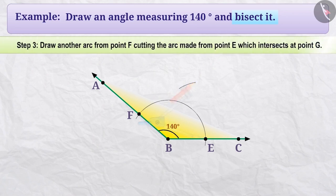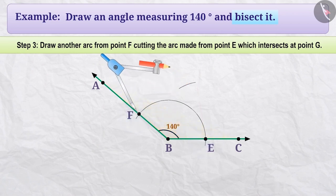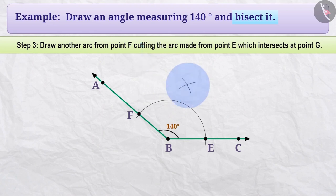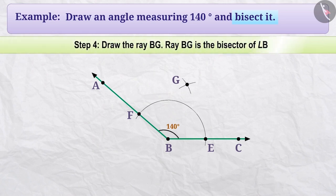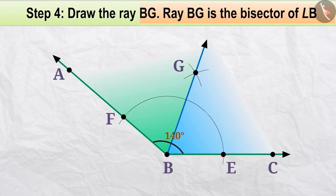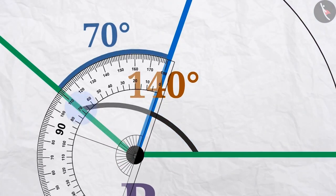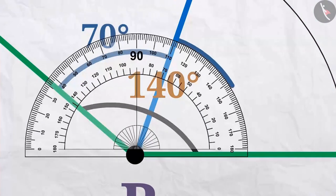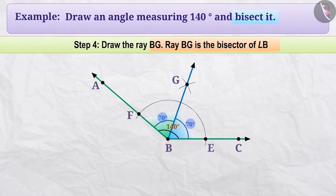Step 3: Keeping the same radius in the compass, place the pointed end on F and draw another arc that intersects the arc made from E. Both arcs intersect at point G. Step 4: Draw ray BG from vertex B through G. Ray BG divides angle ABC into two equal parts, so it is the desired bisector. To verify this, measure both angles with a protractor — the measurement of both angles is equal.